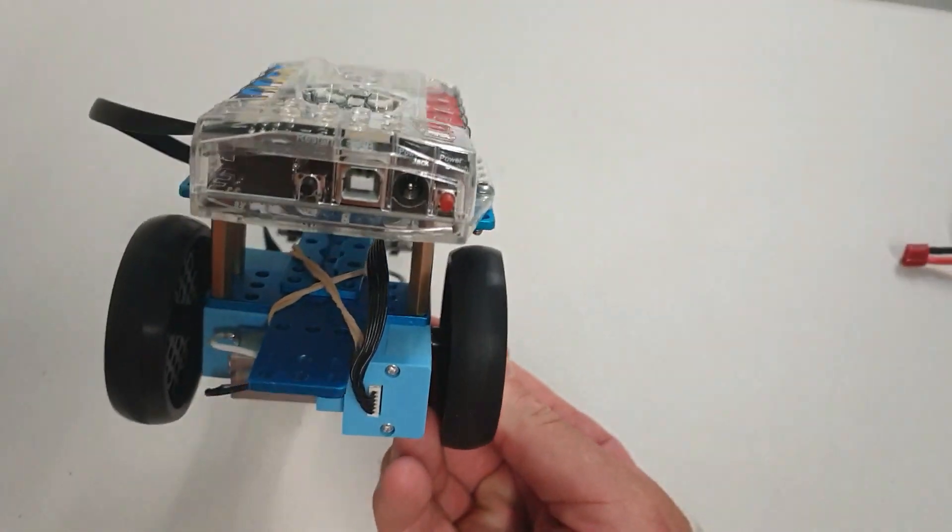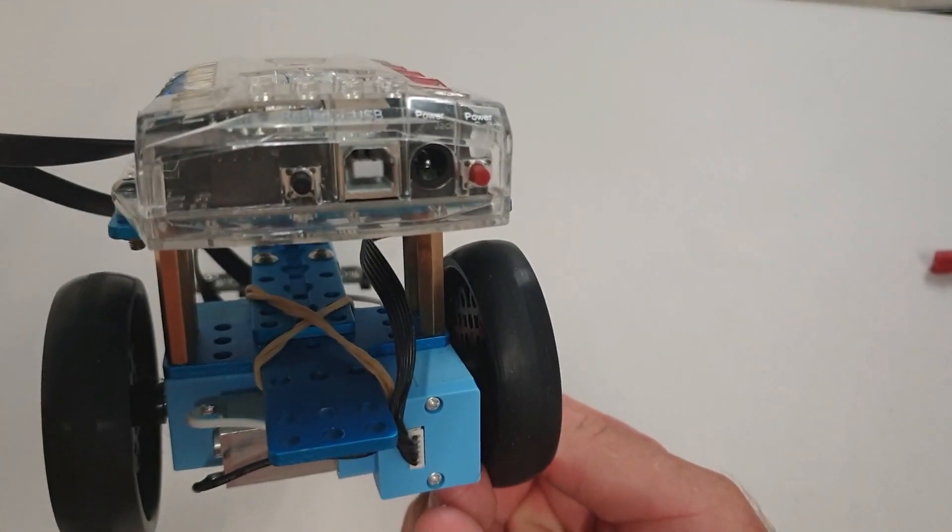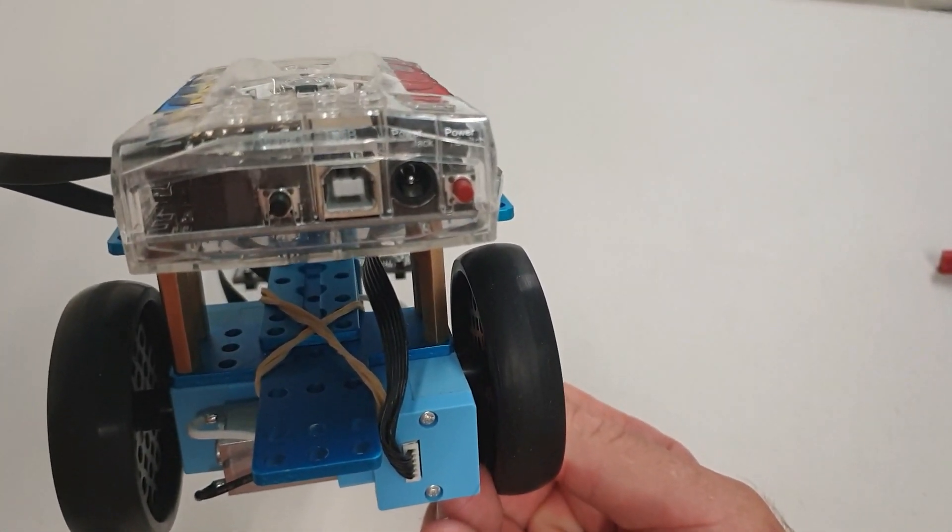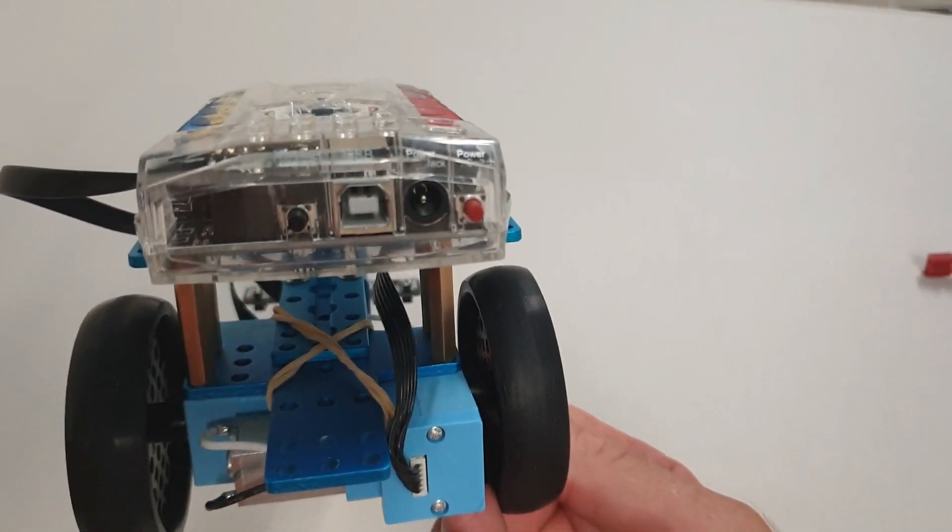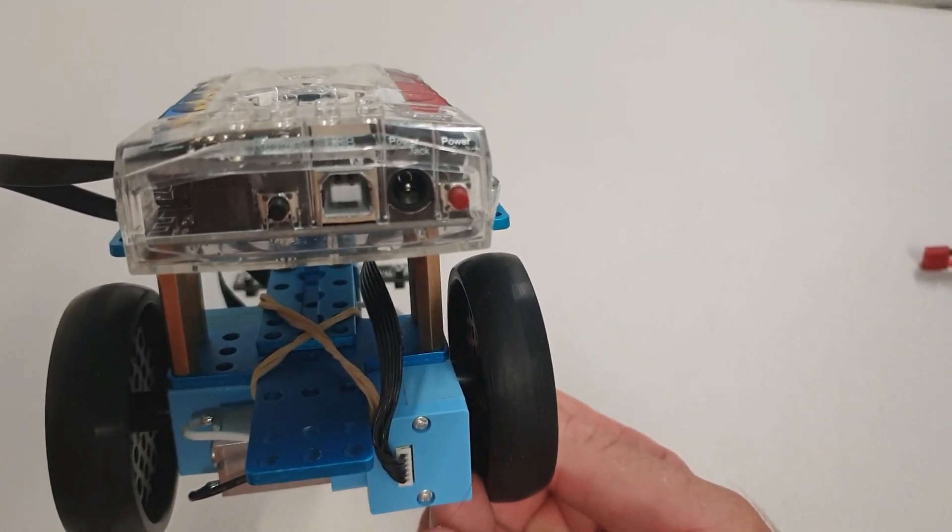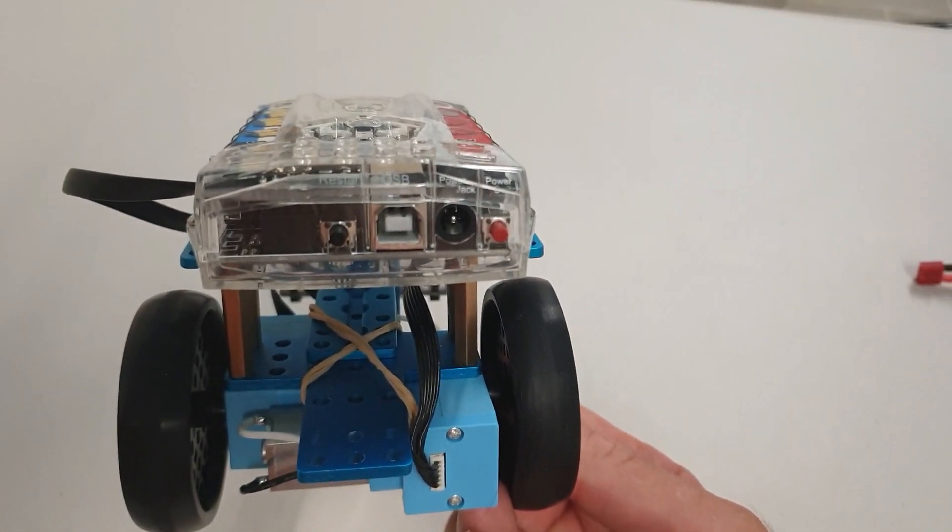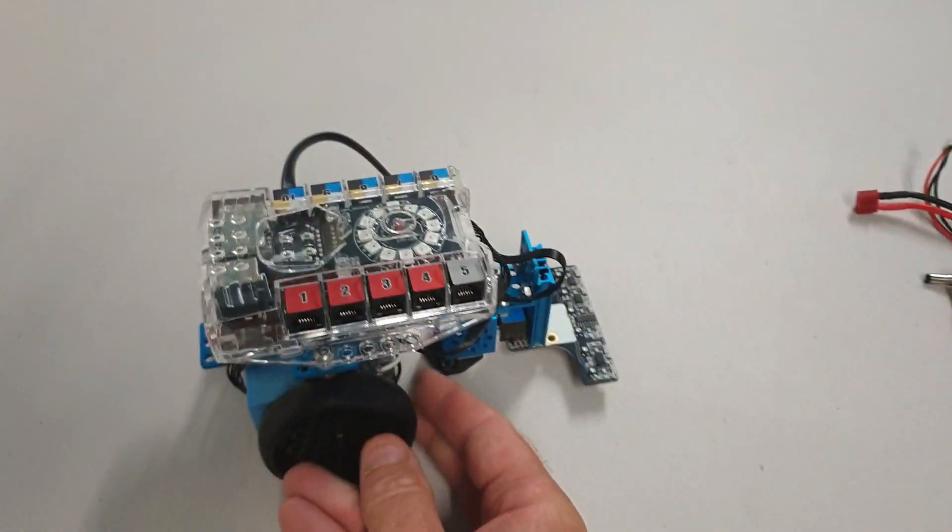And one other little thing I did. I just put a couple of rubber bands there in a crisscross, because I'm just going to lift those rubber bands up and shove my battery underneath them. And the rubber bands are there just to hold my battery still. Alright, and that's the robot finished.